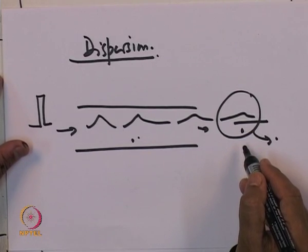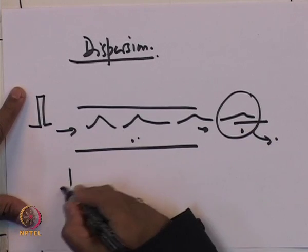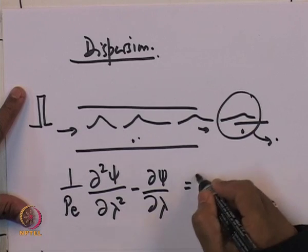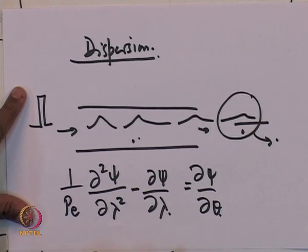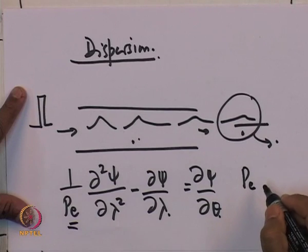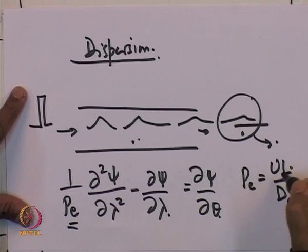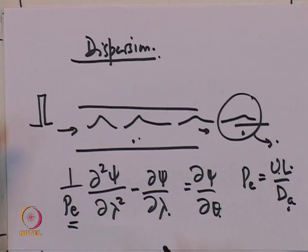We derived a differential equation for this: (1/Pe) ∂²ψ/∂λ² − ∂ψ/∂λ = ∂ψ/∂θ, where θ is a dimensionless time, λ is a dimensionless length, and the Peclet number Pe = UL/D_A, where D_A is the dispersion coefficient, L is the length, and U is the velocity. The dispersion coefficient has a broader meaning than Fick's law diffusion — it characterizes all mixing outside convective flow.